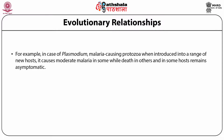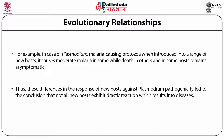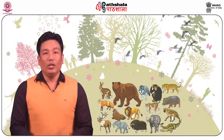Nowadays, availability of experimental evidence suggests that pathogenicity of parasites is not necessarily dependent on relatively new relationships with hosts. For example, in case of Plasmodium — the malaria-causing protozoan — when introduced into a range of new hosts, it causes moderate malaria in some, while death in others, and in some hosts remains asymptomatic. Thus, these differences in response of new hosts against Plasmodium pathogenicity lead to the conclusion that not all new hosts exhibit drastic reactions resulting in disease.